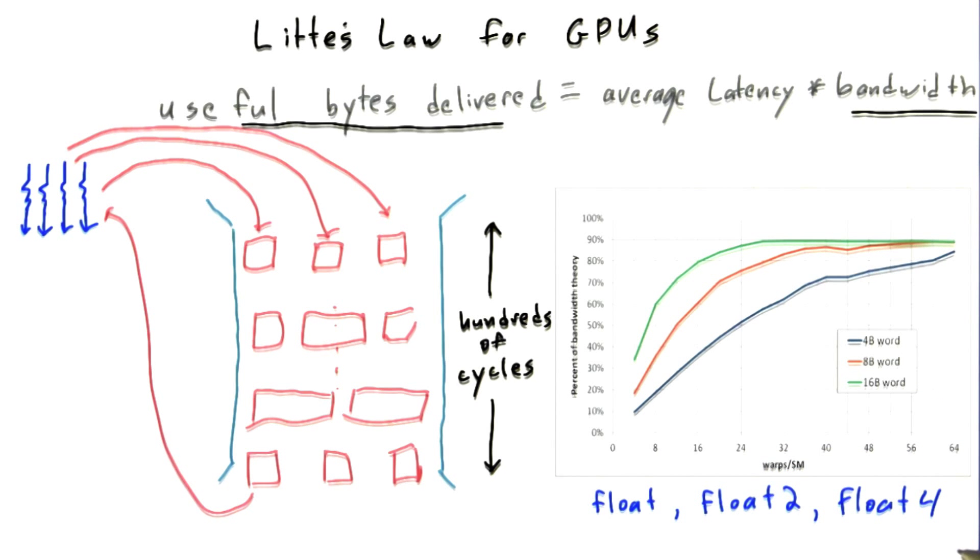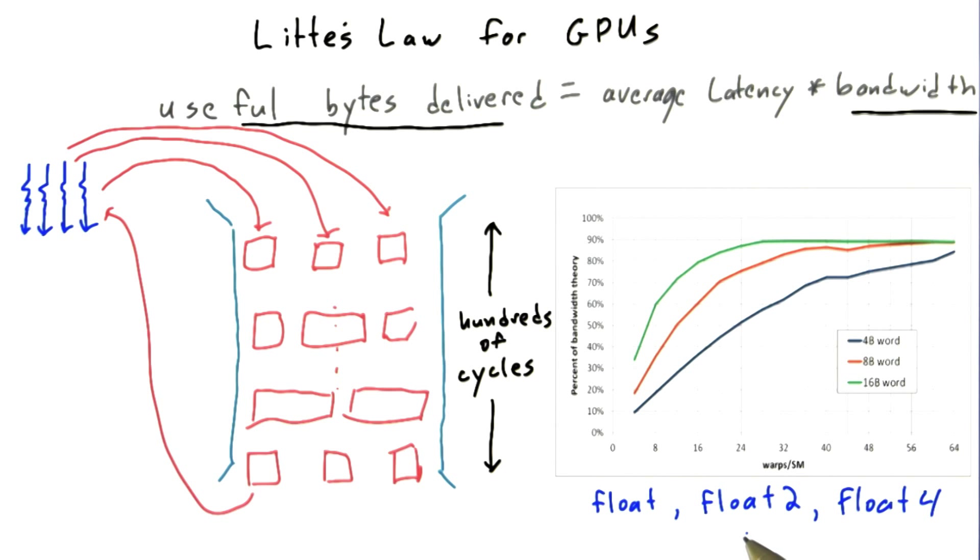And there exists in CUDA data types in the 4, 8, and 16-byte variety. For example, float, which is what we've been using so far. Float2, which is two adjacent floating point numbers. Float4, which is four adjacent floating point numbers.